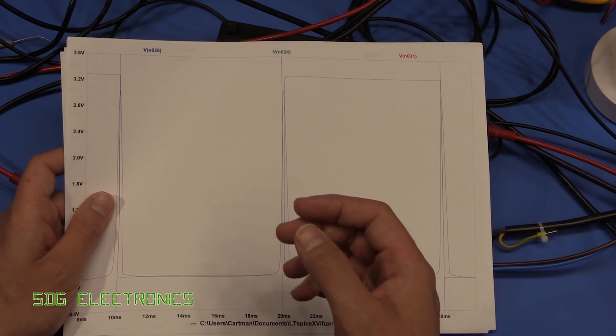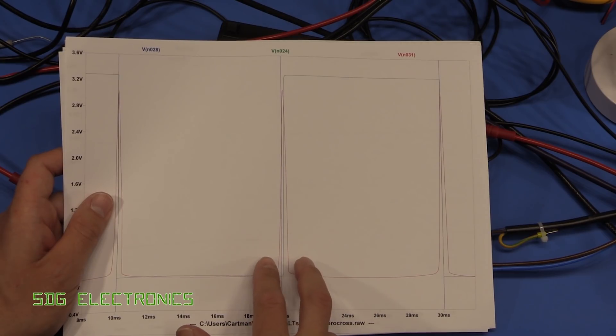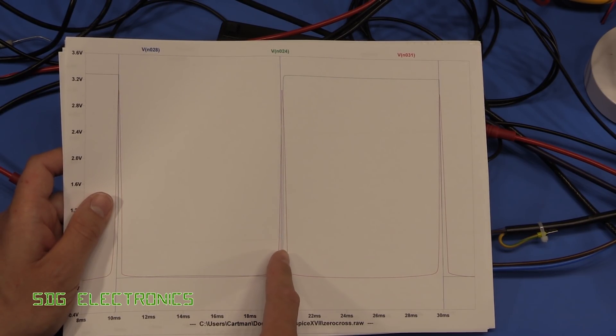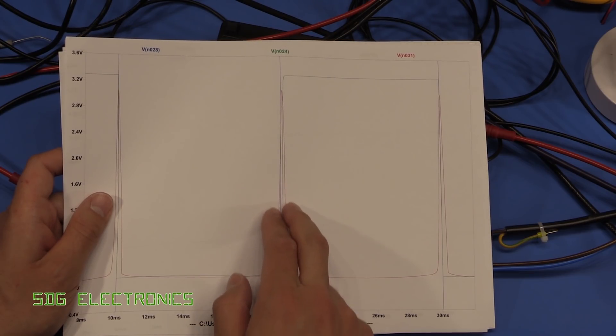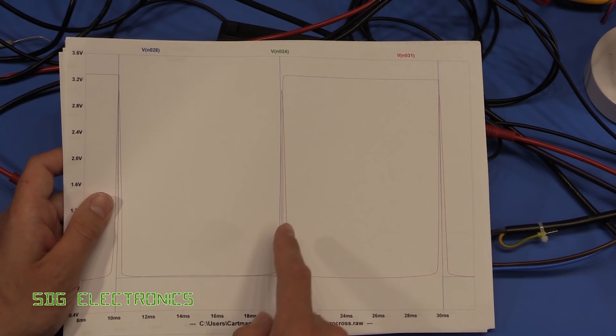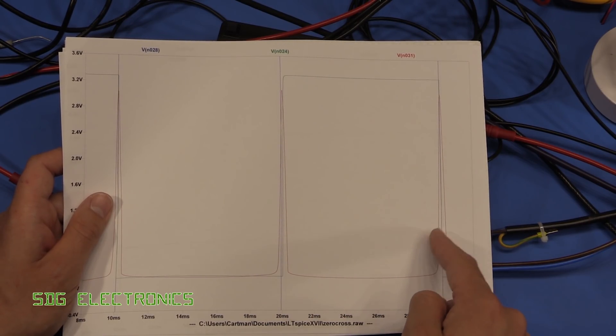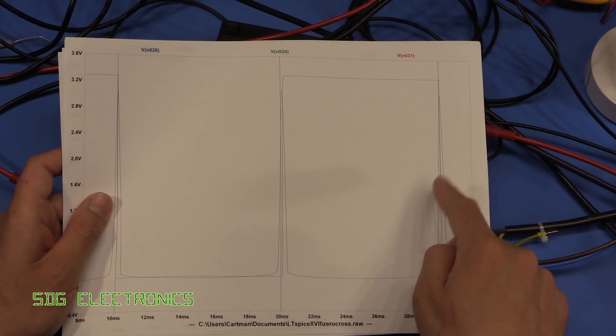So what I've actually done is I've written a bit of software for the microcontroller and what it's doing is it's looking at where the pulse starts and where the pulse ends and it doesn't really matter where on the waveform it does this and then basically it just halves that time and uses that as the zero crossing point for the next AC cycle.